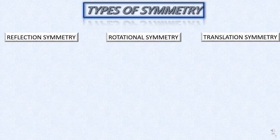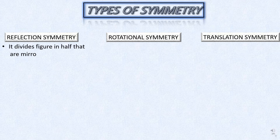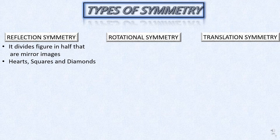Let us see the types of symmetry. There are three types of symmetry: reflection symmetry, rotational symmetry, and translational symmetry. Reflection symmetry divides a figure in half into parts that are mirror images. For example, hearts, squares, and diamonds.